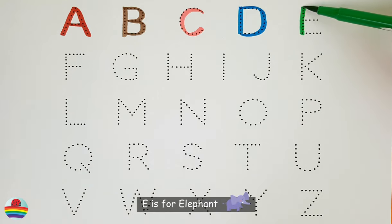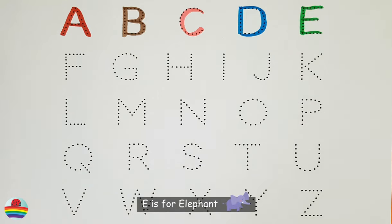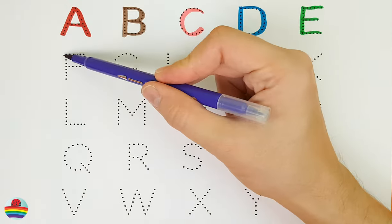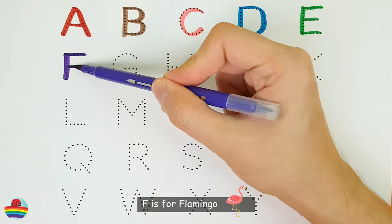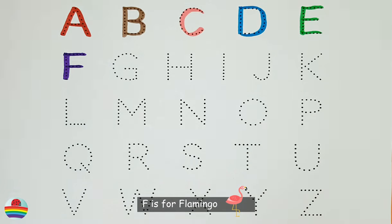E. E is for elephant. E. F. F is for flamingo. F.